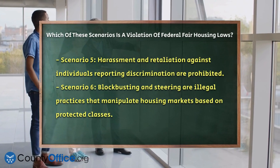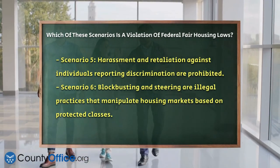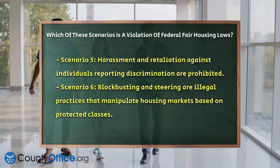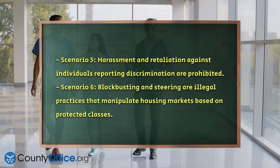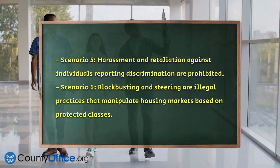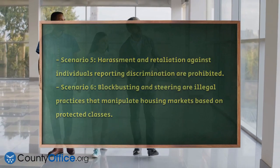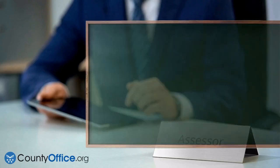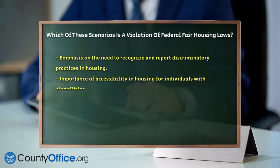Scenario 5: Harassment and retaliation. Harassment, including sexual harassment and retaliation against those who report discrimination, are also prohibited. This includes threatening or coercing someone who is exercising their fair housing rights or assisting in a fair housing investigation.